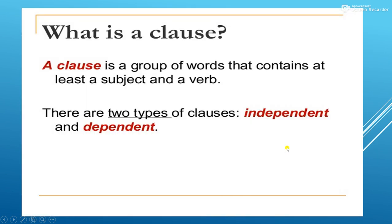What is a clause? The clause is a group of words that contains at least a subject and a verb. So a clause is the direct opposite of a phrase. In a phrase there is no subject and verb, so it is meaningless. But in a clause there is a subject and verb, so it gives meaning.